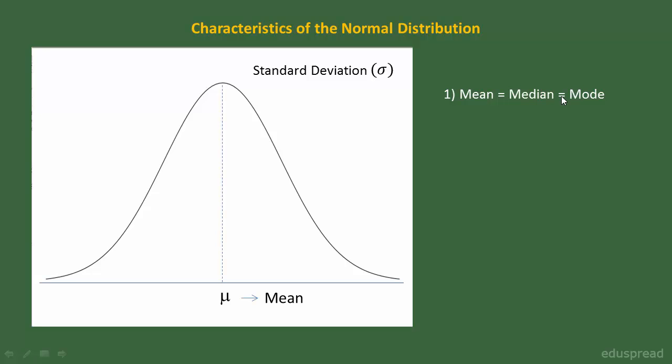For example, if we know that the mean of a random variable is 10, and if that random variable is normally distributed, then we can safely say that its median and mode are also 10.